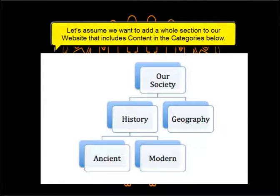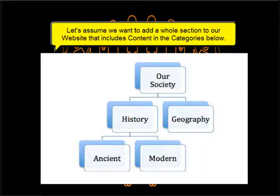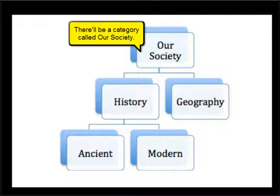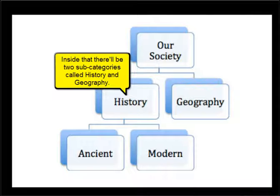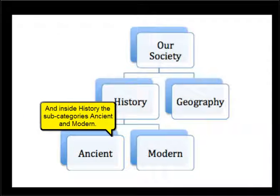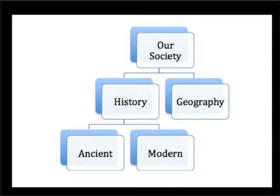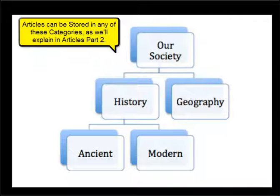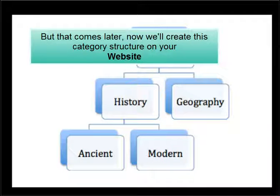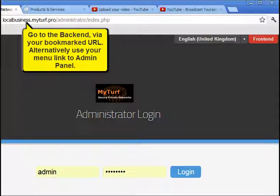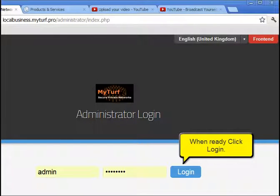Let's assume we want to add a whole section to our website that includes content in these categories. There'll be a category called Our Society. Inside that, there'll be two sub-categories called History and Geography. And inside History, the categories Ancient and Modern. Articles can be stored in any of these categories, as we'll explain in Articles Part 2. But for now, we'll create this category structure on your website. Go to the backend via your bookmarked URL, or use your menu link to Admin Panel. When ready, click login.